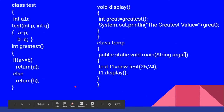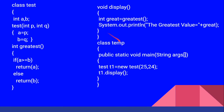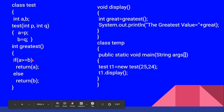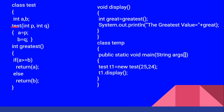Now let us see with an example how nesting of methods works. We have defined a class called test and a main class called temp. Inside the test class, there is a method called test which takes two integer parameters p and q, and assigns a = p and b = q. There is another method called greatest: if a is greater than or equal to b it returns a, otherwise it returns b.